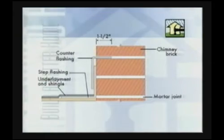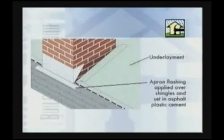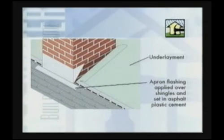Your bricklayer will typically install the counter flashing as the chimney is being built. With the underlayment pulled away, install apron flashing for the downslope portion of the masonry chimney.